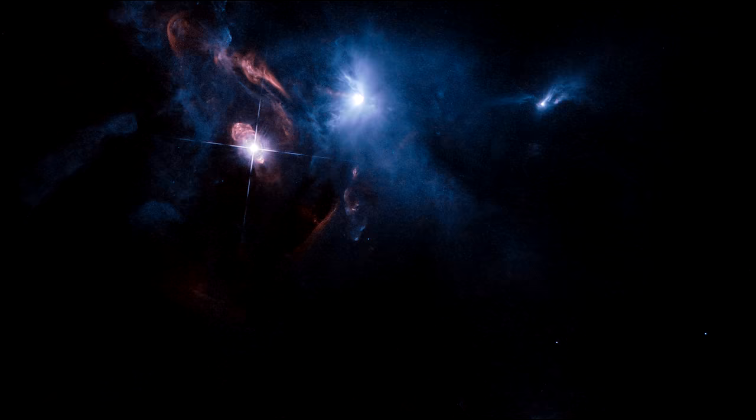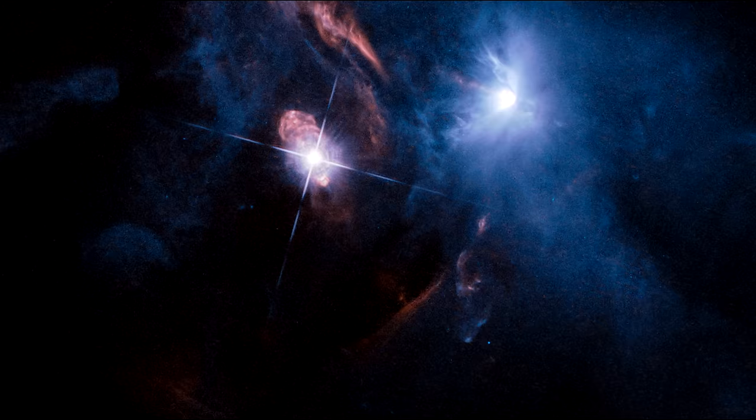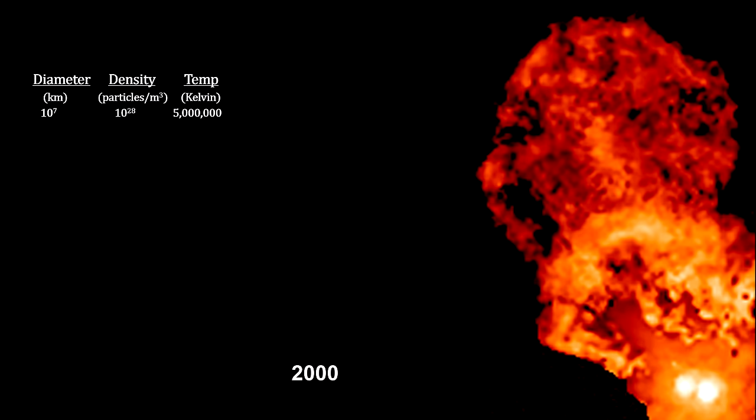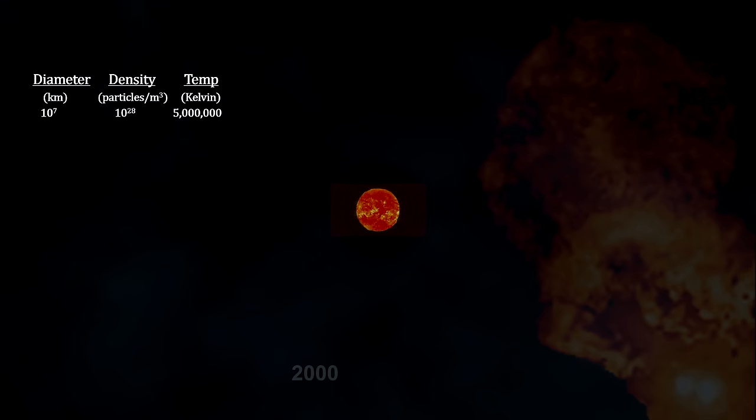XZ Tauri is actually a binary star system. It is expelling hot bubbles of gas into the surrounding space. Gas from an unseen disk around one or both of the stars is channeling through magnetic fields surrounding the binary system and forced out into space at nearly 540,000 kilometers per hour, or 300,000 miles per hour. This outflow, which is only about 30 years old, extends nearly 96 billion kilometers or 60 billion miles from the star.